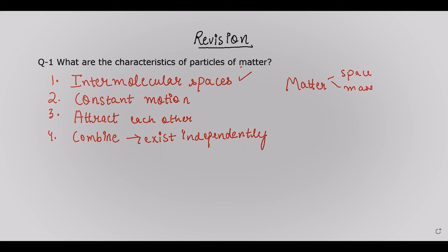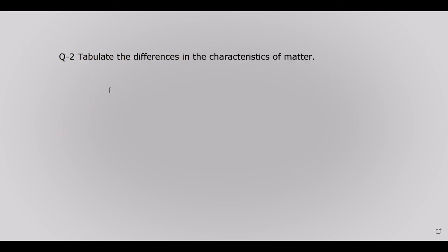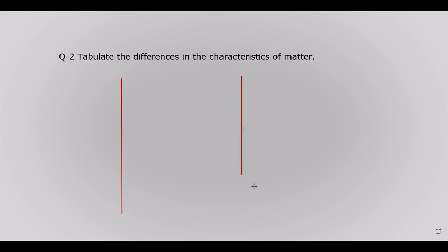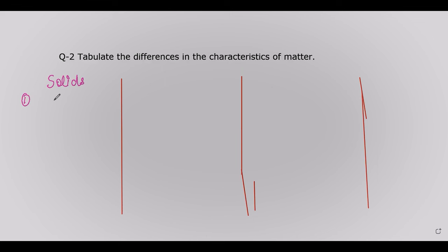Let's move to question number two: tabulate the differences in the characteristics of matter. This is a very important question that is often asked in exams, where we have to write down the differences in characteristics of solids, liquids, and gases. Let's go through them one by one, starting with solids.